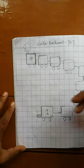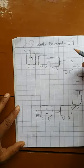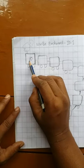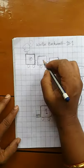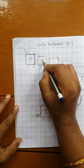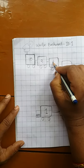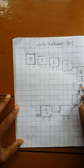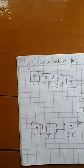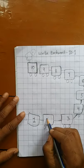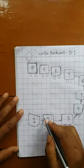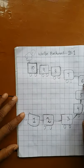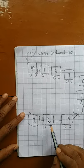Now children, look at this picture. Here what we have to write? We have to write numbers in backward. Write backward 10 to 1. Here 10 is already written. If you count backward, then: 10, 9, 8, 7, 6, 5, 4, 3, 2, 1. Finished? Now again: 10, 9, 8, 7, 6, 5, 4, 3, 2, 1.